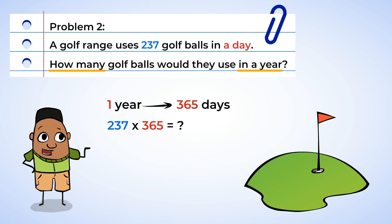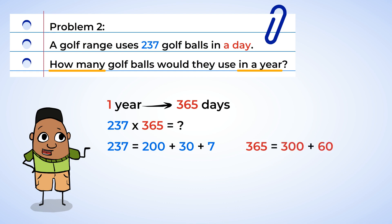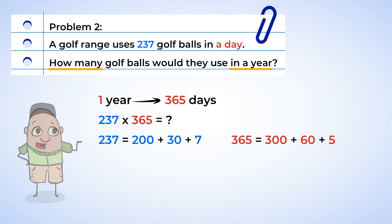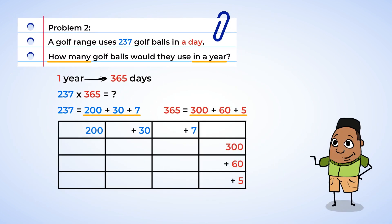These are some big numbers! Now let's use an array to help us multiply. We can break each of the numbers into their place values. 237 is 200 plus 30 plus 7, and 365 is 300 plus 60 plus 5. Now let's set up the array. Look at the numbers we're going to be multiplying together. There are quite a few zeros.